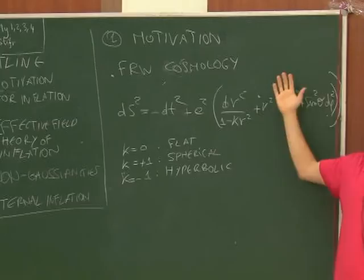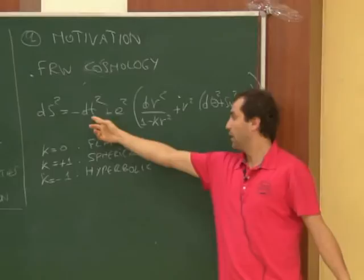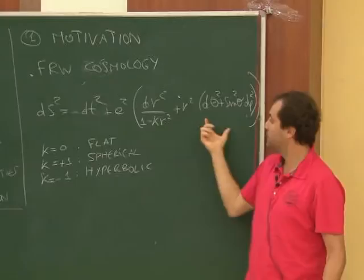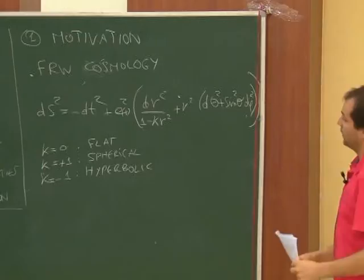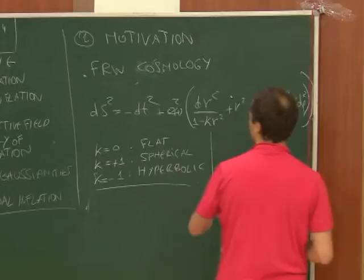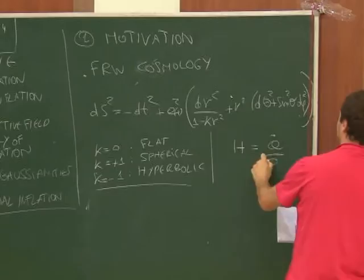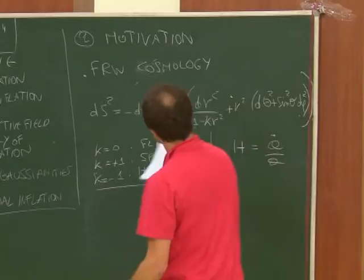The FRW metric represents a spatial surface that is either flat, spherical, or hyperbolic, and the time part is simple. As time goes on, this spatial surface is rescaled by a scale factor that is a function of time only. One important quantity is the Hubble rate H = ȧ/a, which characterizes the rate of change of the scale factor.